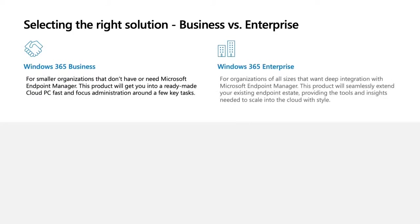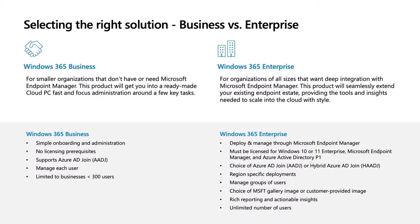Windows 365 has two distinct product editions: Business and Enterprise. We've designed these two editions to meet the needs of a variety of different business sizes. With Business — the focus for this presentation — we ensure that smaller organizations have everything they need to easily provide their users with cloud PCs.